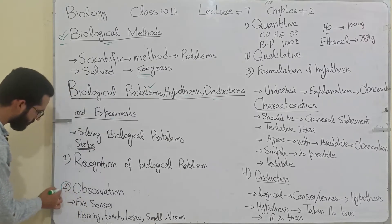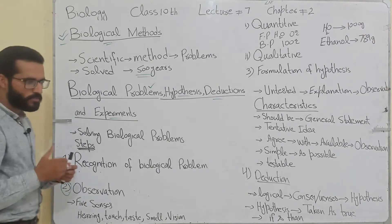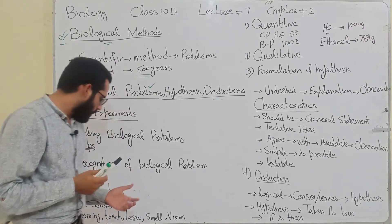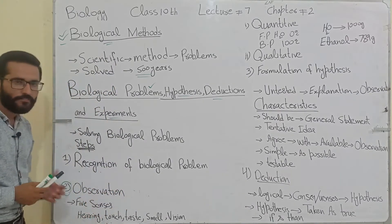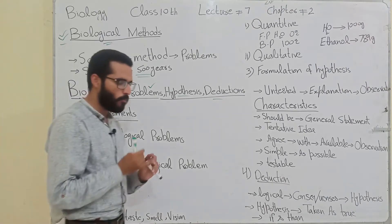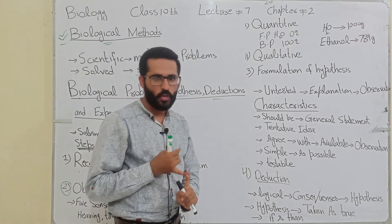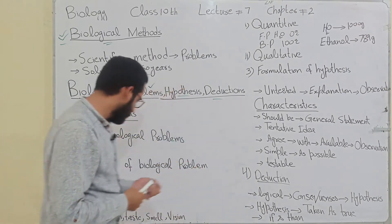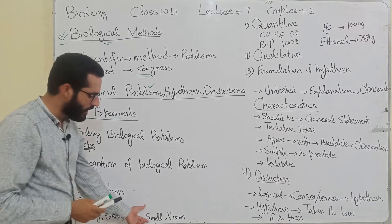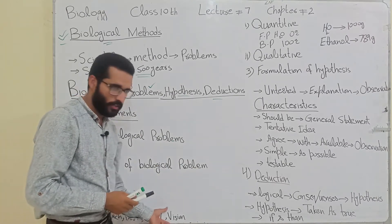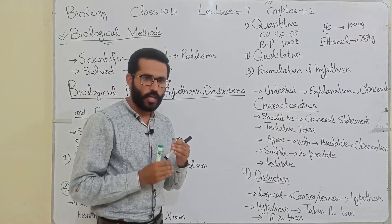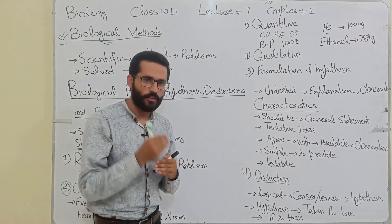Number 2 is observation. Observation is based on five senses: number 1 is hearing, touch, taste, smell, and vision. These are the five senses on which observation depends.